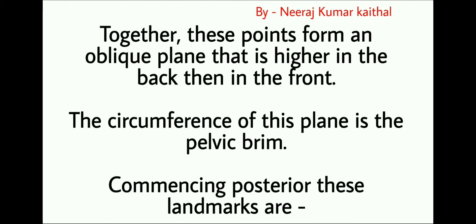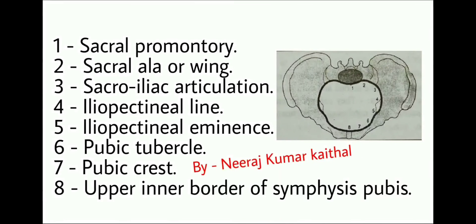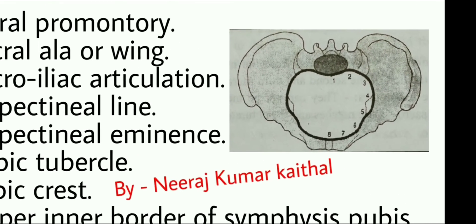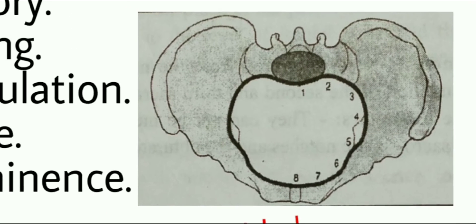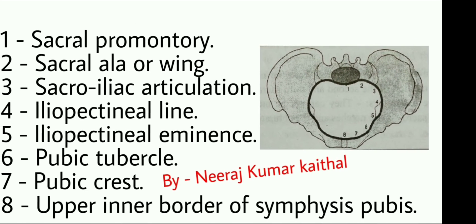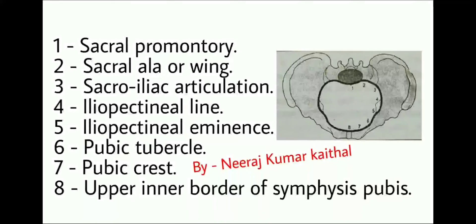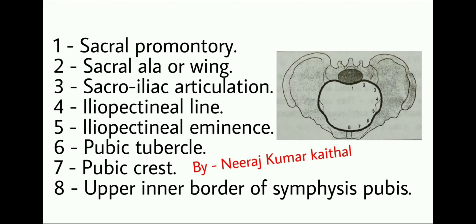Commencing posteriorly, these landmarks are — as you can see in the diagram, all 8 landmark locations are marked, and the name of each landmark is written on the slide. First landmark is sacral promontory. Second is sacral ala or wing. Third is sacroiliac articulation. Fourth is ileopectineal line. Fifth is ileopectineal eminence. Sixth is pubic tubercle. Seventh is pubic crest. Eighth is upper inner border of symphysis pubis.